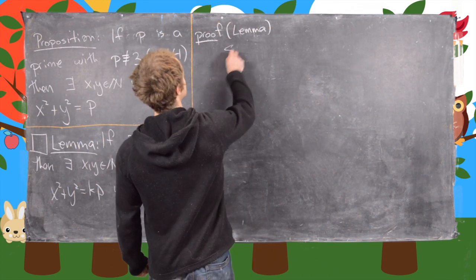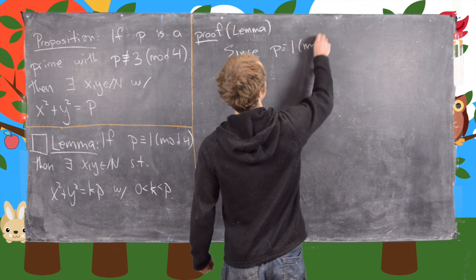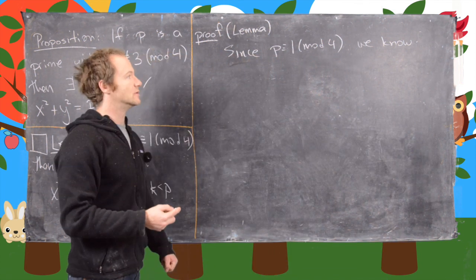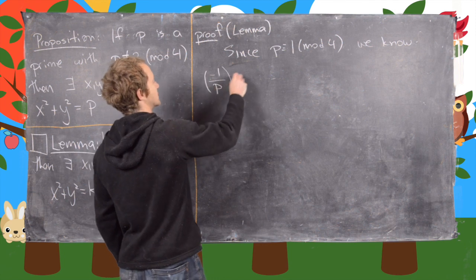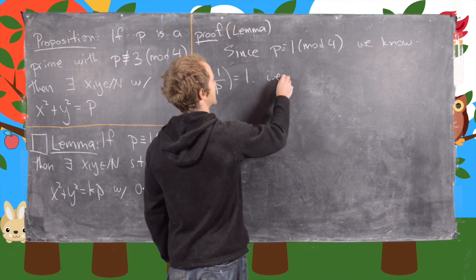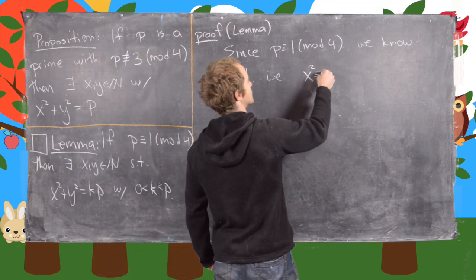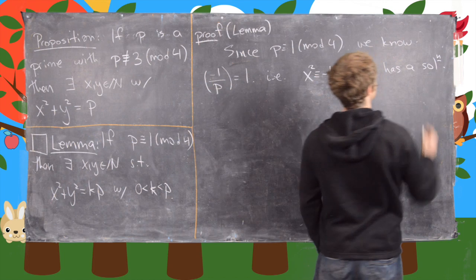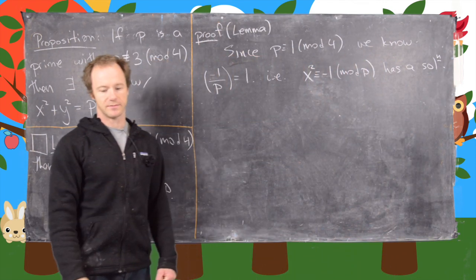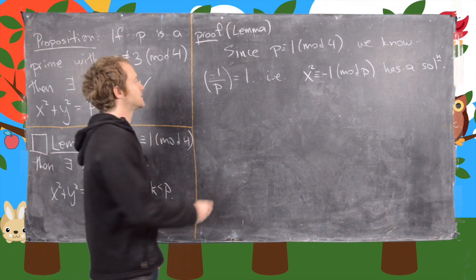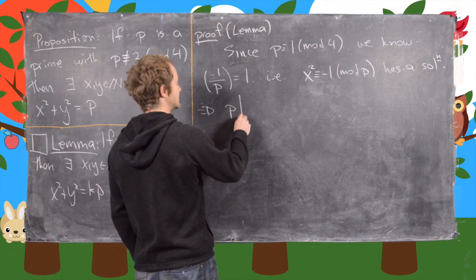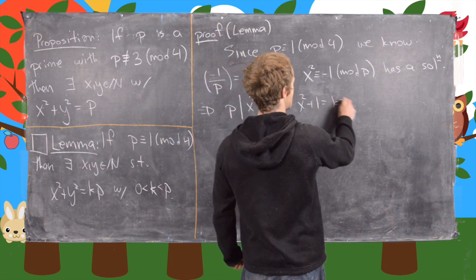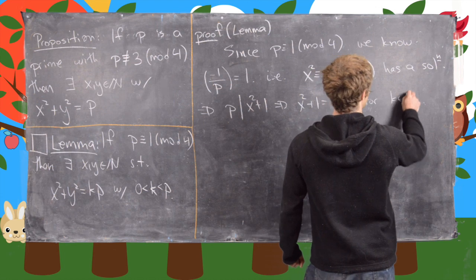Since p is congruent to 1 mod 4, we know that negative 1 is a quadratic residue modulo p. We can write that as a Legendre symbol equal to 1, and what that really means is that x squared congruent to negative 1 mod p has a solution. From there, p divides x squared plus 1, which tells us that x squared plus 1 equals kp for some natural number k.